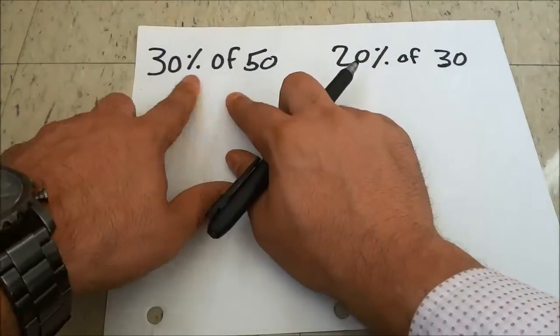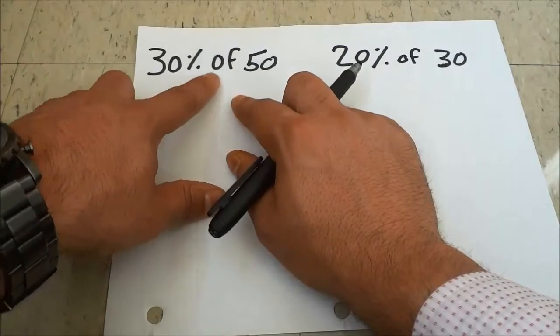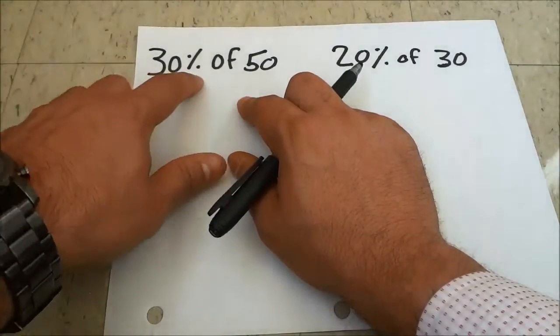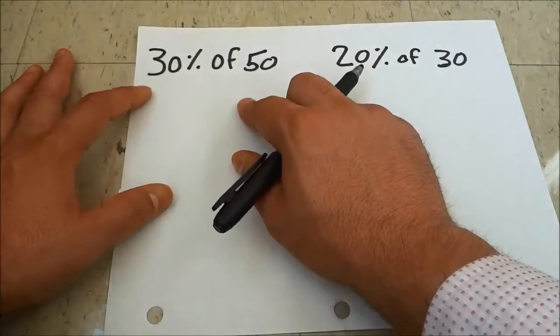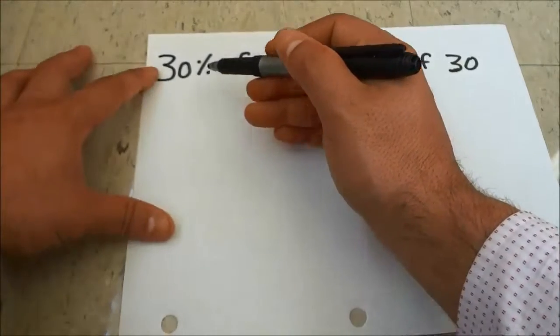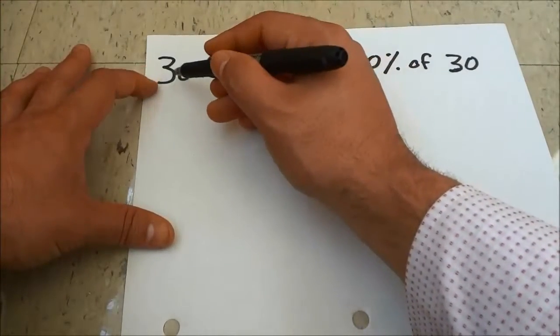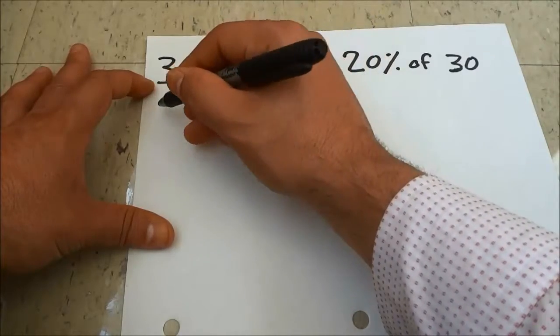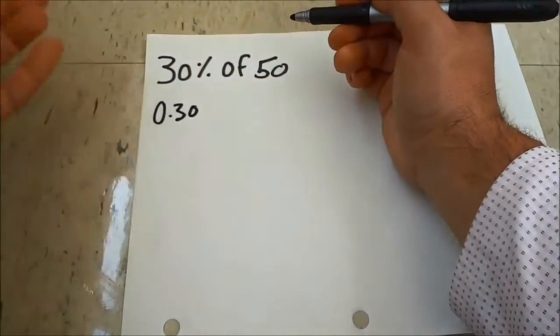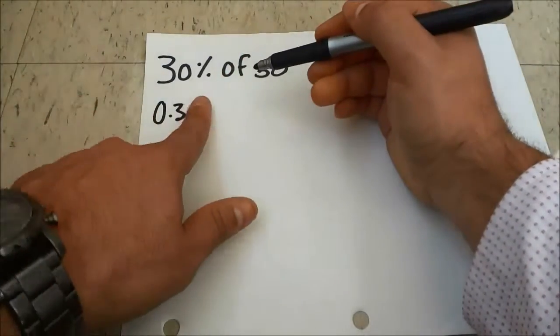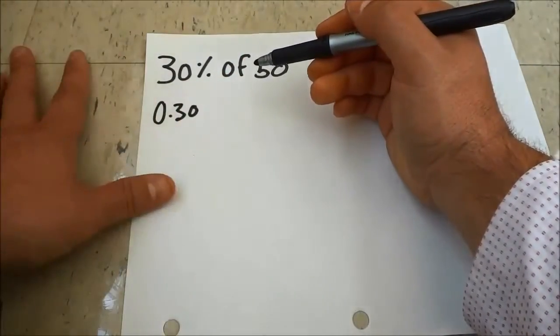The first example that I'm going to use is 30% of 50. The first step is to take this percentage and convert it to a decimal. Since it is 30%, the equivalent decimal would be 0.30, or 0.3 if you wanted to forget about the last zero.